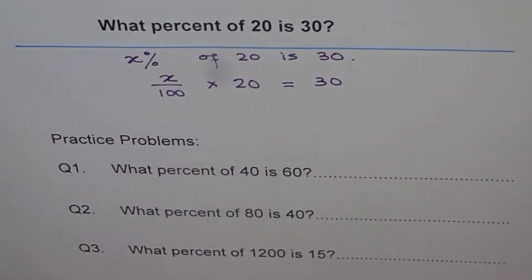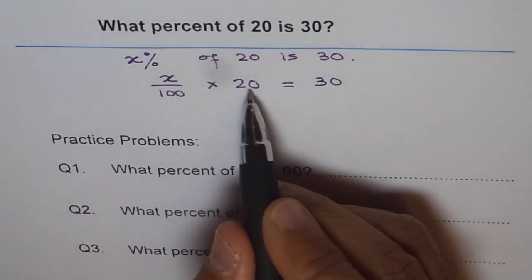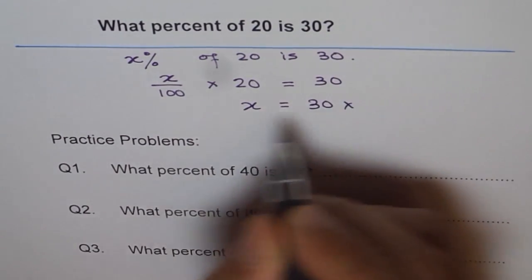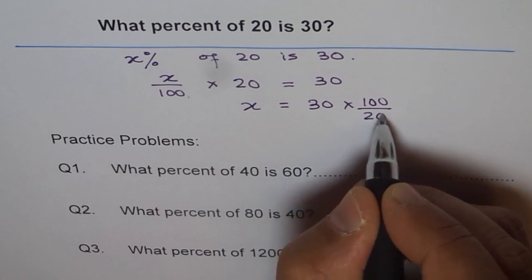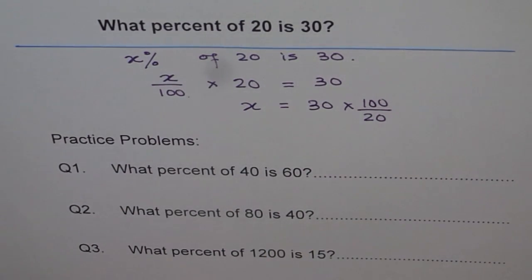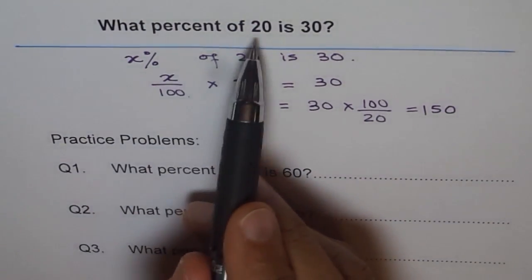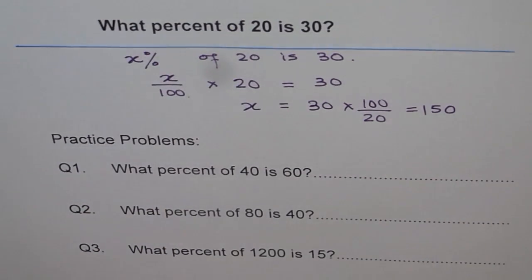So x over 100 times 20 equals 30. To find x, we multiply by 100 and divide by 20. That gives us x equals 30 times 100 divided by 20. Use your calculator: 30 times 100 divided by 20 equals 150. So 150 percent of 20 is 30 — that is the answer.